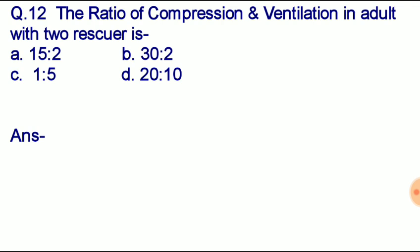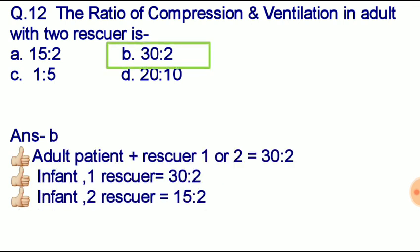Question number twelve: the ratio of compression to ventilation in an adult with 2 rescuers is — option A: 15:2, option B: 30:2, option C: 1:5, option D: 20:10. Correct answer: option B, 30:2. In adults, whether 1 or 2 rescuers are present, the ratio remains constant at 30:2. For infants with 1 rescuer it is 30:2, but with 2 rescuers the ratio changes to 15:2.